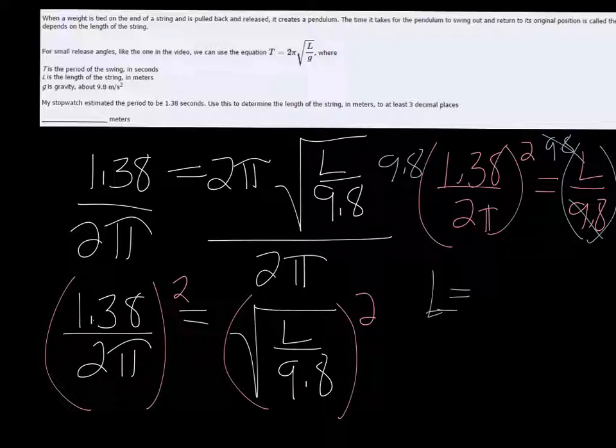And if done correctly, you should get 0.4727, and since we're rounding to 3 decimal places, it's going to be 0.473.